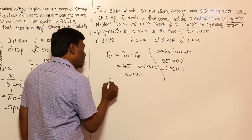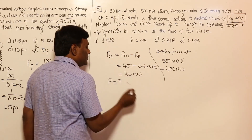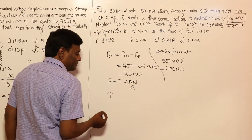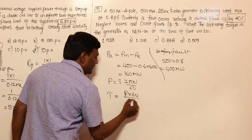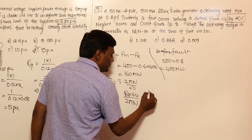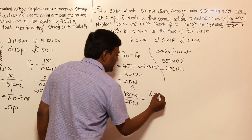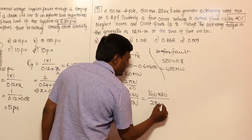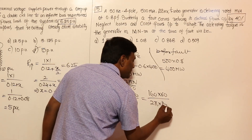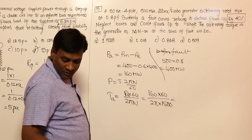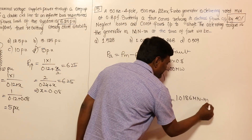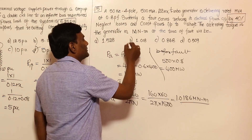Since torque = P × 60 / (2π×N), and accelerating torque = accelerating power × 60 / (2π×N), with synchronous speed for a 4-pole 50 Hz machine being 1500 RPM, accelerating torque = 160×10⁶ × 60 / (2π × 1500). I got 1.0186 mega-newton-metres.